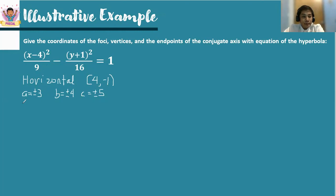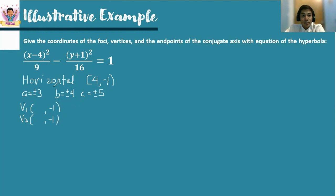For the endpoints of the transverse axis, b sub 1 and b sub 2, we use the formula h plus or minus a, k. So we retain the k value, which is negative 1. We use h plus or minus a: so 4 minus 3 and 4 plus 3. 4 minus 3 is 1, then 4 plus 3 is 7. You can interchange.